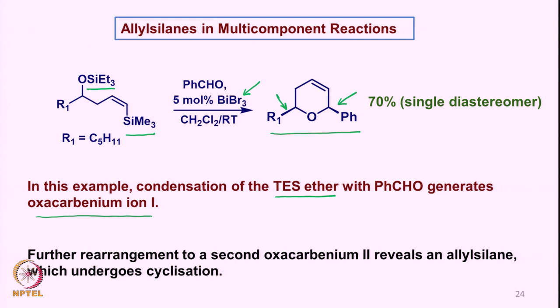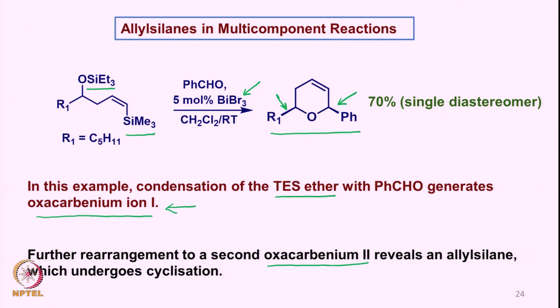Basically it is a vinylsilane and therefore we need first to understand the chemistry of the vinylsilane. And then after the first oxocarbonium ion is formed, it leads to another oxocarbonium ion 2, which allows the revealing of an allylsilane, and that allows the cyclization to undergo to form the final product. So we will see it is a very interesting reaction.